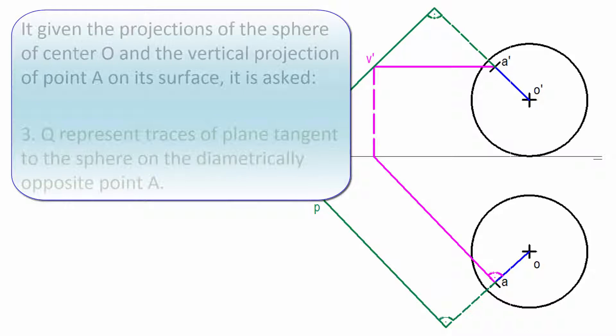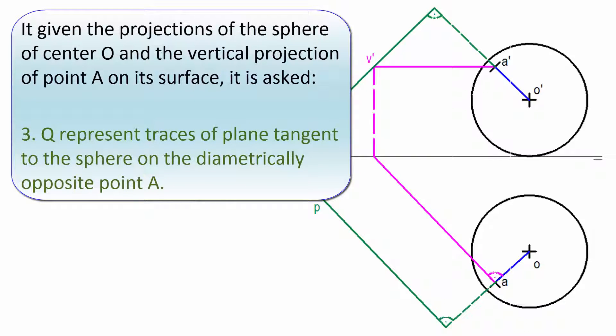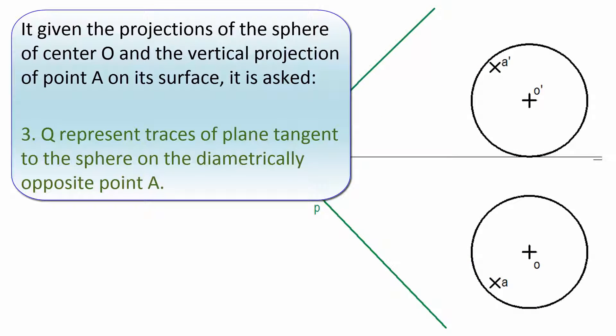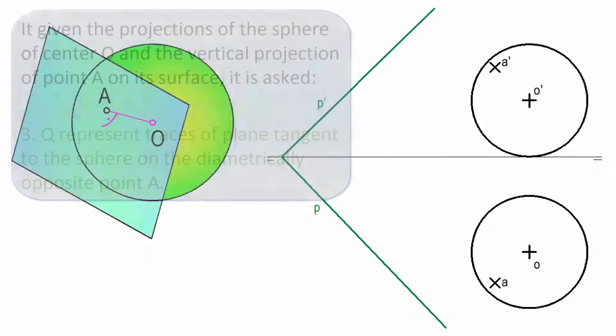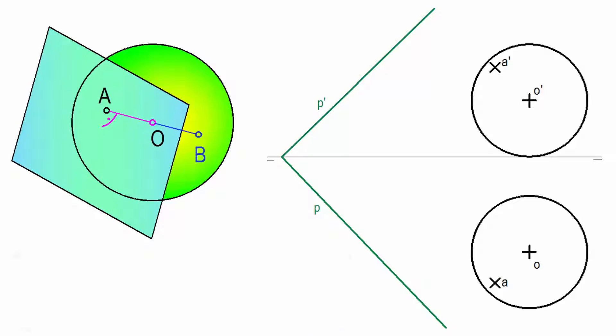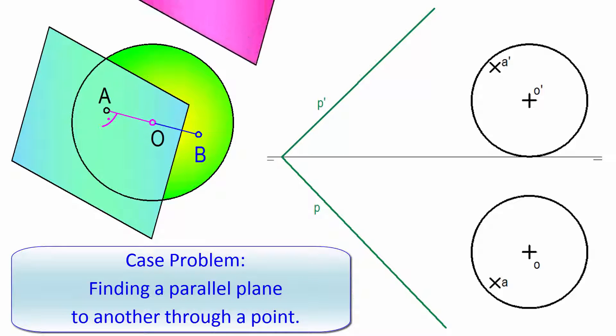We just need the third section, in which we are asked to draw a tangent to the sphere at the diametrically opposite point. Then we have to draw a parallel to the given by the new point level.